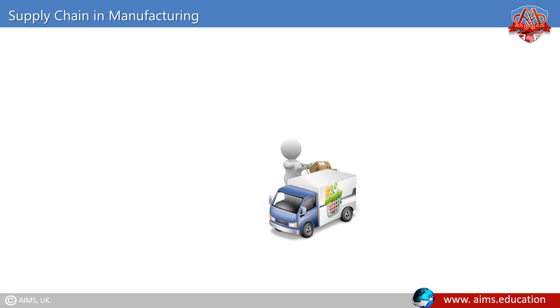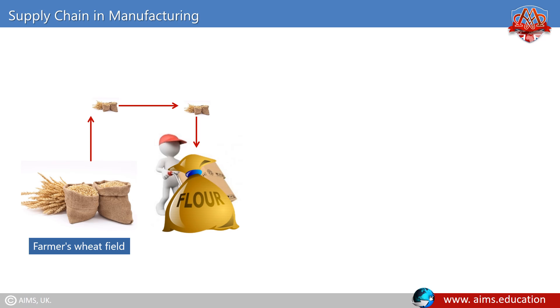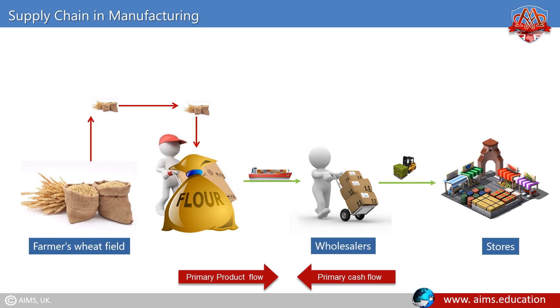For example, a tier 1 supplier might be a wholesale food distributor that purchases flour from its own supplier. This supply chain for flour starts from a farmer's wheat field, which is supplied to the food distributor, processed in a plant, shipped to wholesalers, and distributed to the stores. No matter how far you travel toward the left, you will never run out of new tiers of suppliers. Primary product flows from left to right and primary cash flows from right to left.